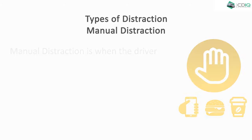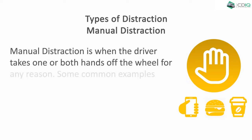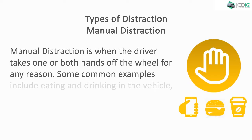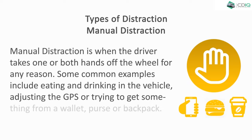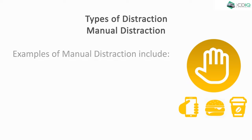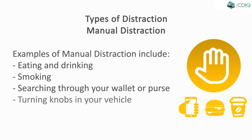Manual distraction is when the driver takes one or both hands off the wheel for any reason. Examples of manual distractions include eating and drinking, smoking, searching through your wallet or purse, turning knobs in your vehicle, or using a CB radio.